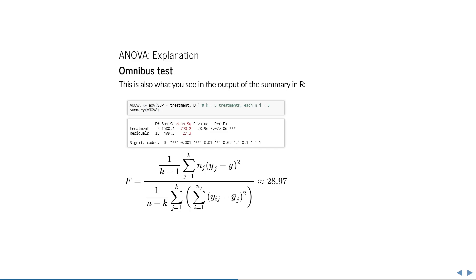The mean squared differences is then simply equal to the sum of squared differences divided by their degrees of freedom. Lastly, we divide the mean squared differences of treatment by the mean squared difference of the residuals, and end up with an f-value of 28.97.